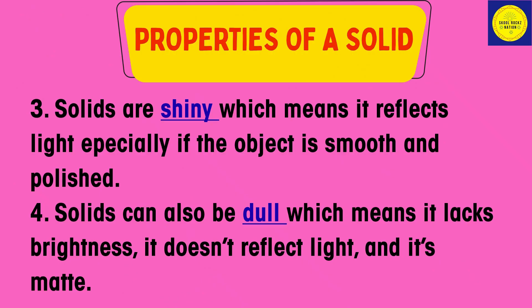Property 3: Solids are shiny, which means it reflects light, especially if the object is smooth and polished. Solids can also be dull, which means it lacks brightness, it doesn't reflect light, and it is also matte.